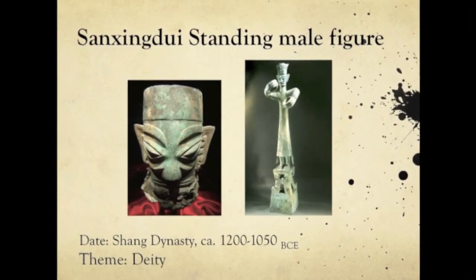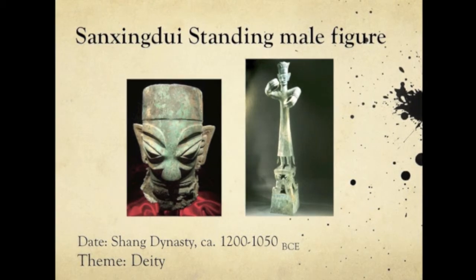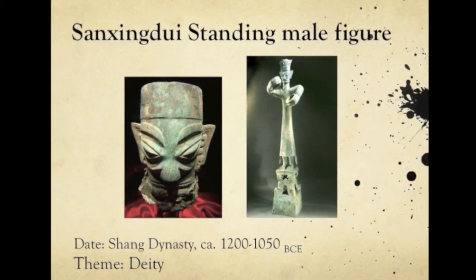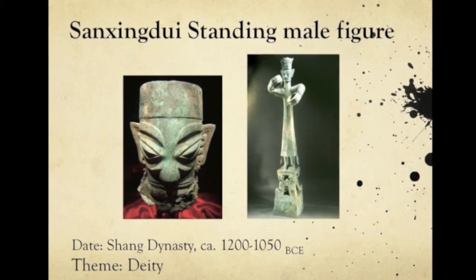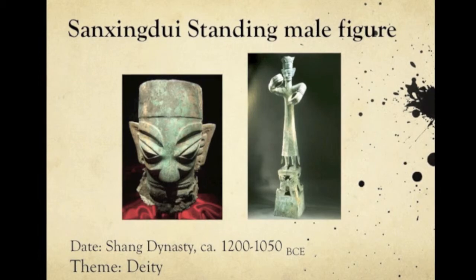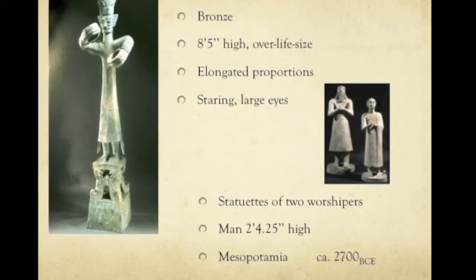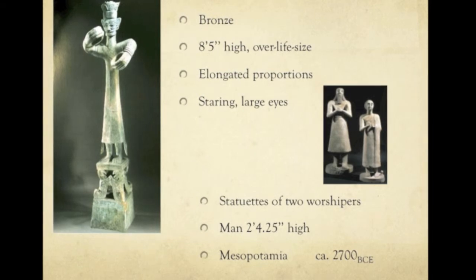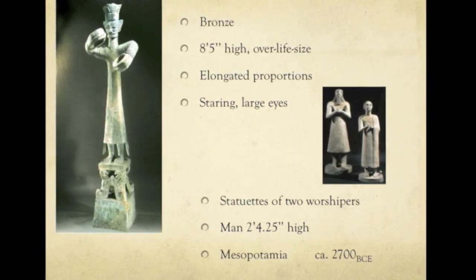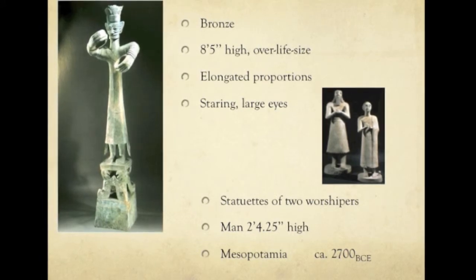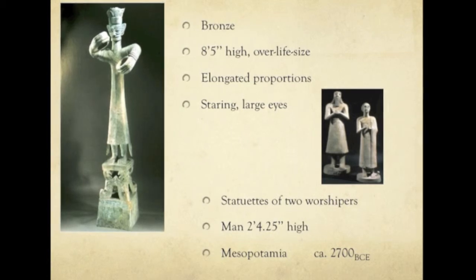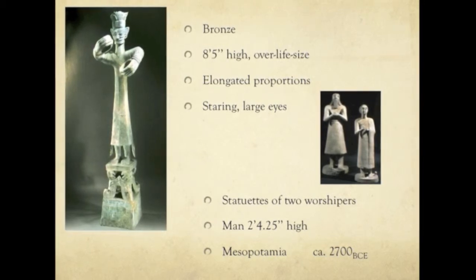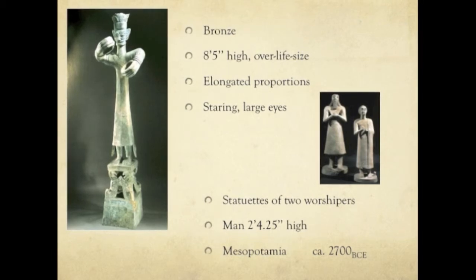The Shang Dynasty, from the 1600s to 1050 BCE, is the first great Chinese dynasty of the Bronze Age. Excavations at Sanxingdui have revealed a civilization dated at 1200 to 1050 BCE, contemporaneous with the Shang but with a different artistic aesthetic. The most dramatic find was a bronze statue more than 8 feet tall — highly stylized with elongated proportions, large staring eyes, and great arms branching dramatically outward, ending in oversized hands that once held an object. Statues of two worshippers with oversized eyes and tiny hands make a good comparison with this standing male figure; both play an important role in religious rituals.